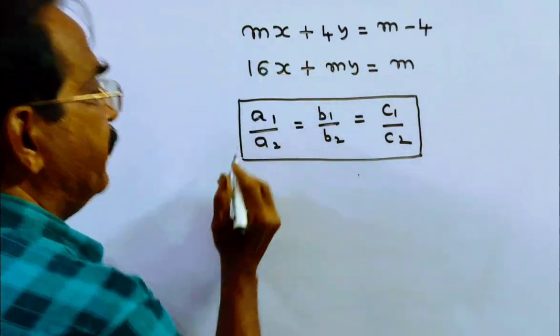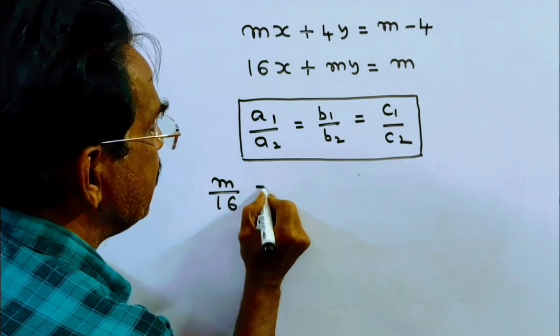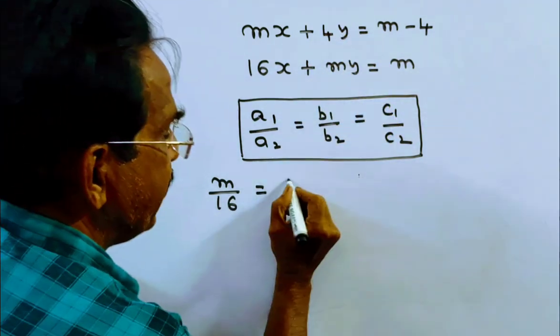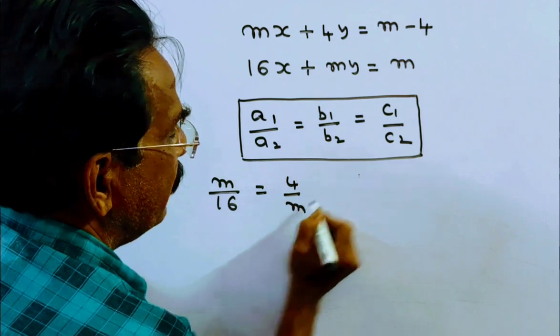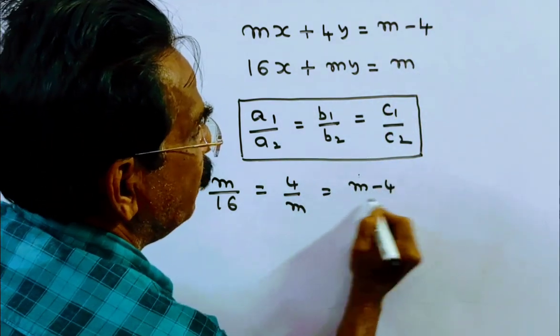So, m by 16 is equal to 4 by m, that is equal to m minus 4 by m.